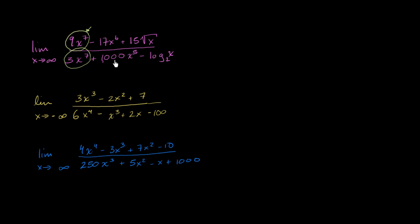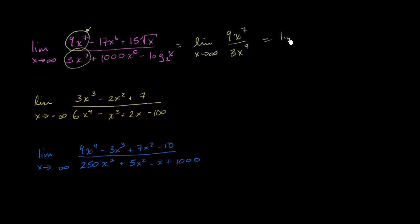As we get closer and closer to infinity, this function is going to be roughly equal to 9x to the 7th over 3x to the 7th. We can say this limit is going to be the same thing as the limit as x approaches infinity of that expression. We can just cancel out the x to the 7th, so it's going to be 9/3, which is just 3. So that is our limit as x approaches infinity of all of this craziness.